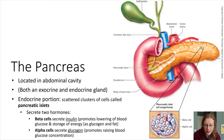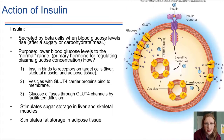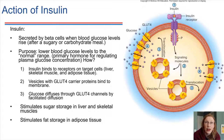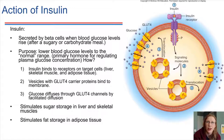When insulin is released into the bloodstream, it makes its way to target cells. The target cells could be skeletal muscle, cells in the liver, or cells in adipose tissue. Those are the primary targets for insulin. When insulin finds its target cell, it will bind on the surface of the cell.